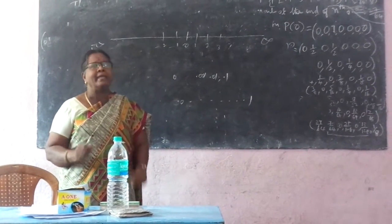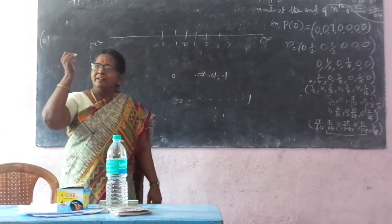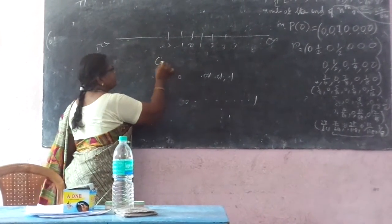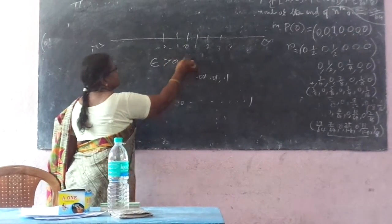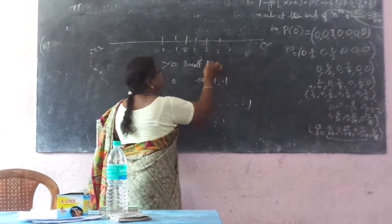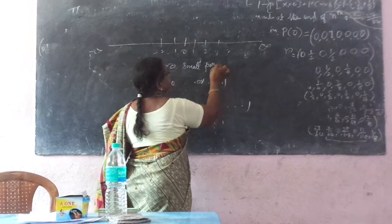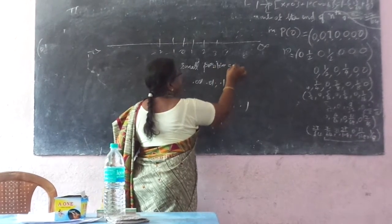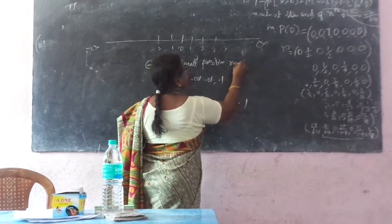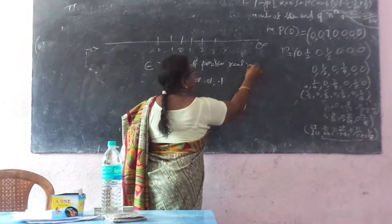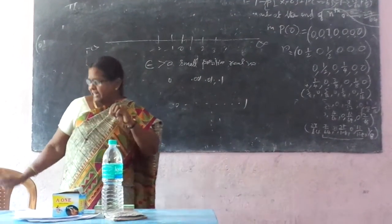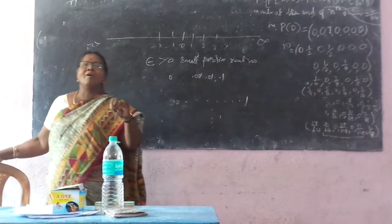That is why we symbolize it with epsilon. Epsilon greater than zero is small — a very small positive quantity. A small positive real number, that is the meaning of epsilon.